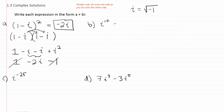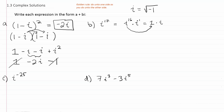One way to handle these problems is to think about how many times 4 goes evenly into the exponent, since i to the fourth is just 1. So I can write i to the 17th as i to the 16th times i. Since 16 is divisible by 4, i to the 16th equals 1, giving us 1 times i. The rule is: if you can write the exponent as a power divisible by 4, that part becomes 1, and whatever's left is the answer. So i to the 17th equals i.